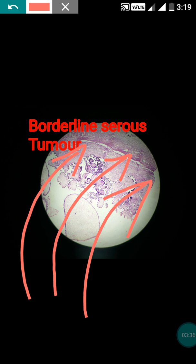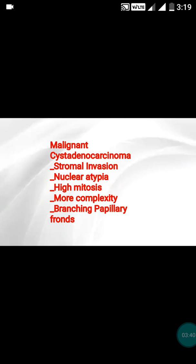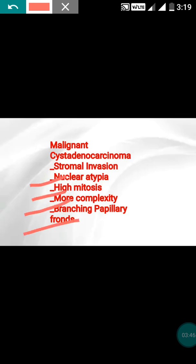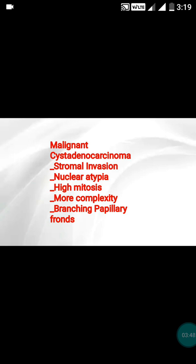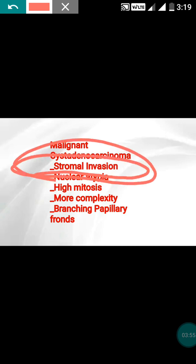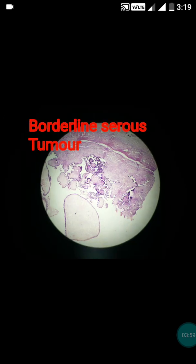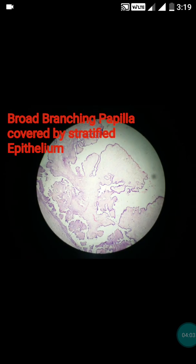If all the features of malignancy are present — nuclear atypia, mitosis, complexity, branching papillary fronts — but there is absence of one single factor, that is stromal invasion, then the tumor is not called malignant; it should be called borderline. So if stromal invasion is not seen, it is a borderline serous tumor.